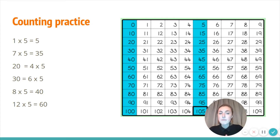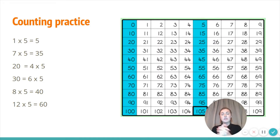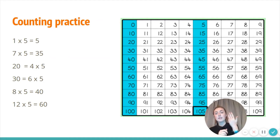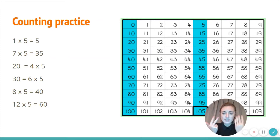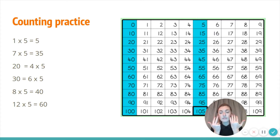Something times five equals forty. I know how to count in fives, so I'm going to keep counting in fives until I get to forty: five, ten, fifteen, twenty, twenty-five, thirty, thirty-five, forty. I counted eight lots of five, so the answer is eight times five is forty.